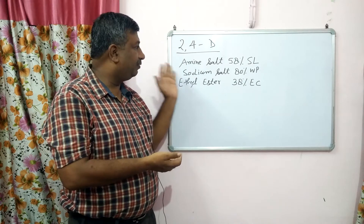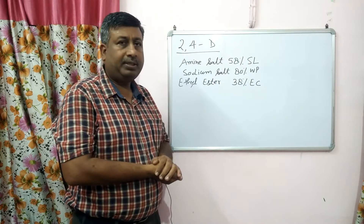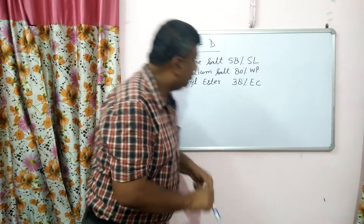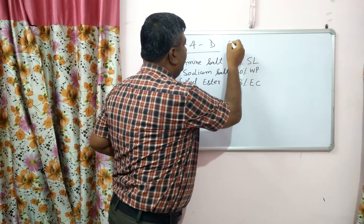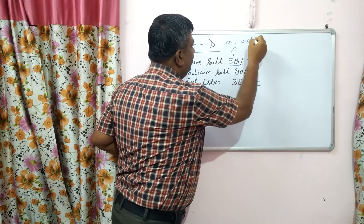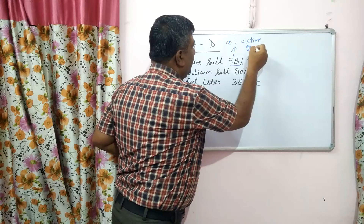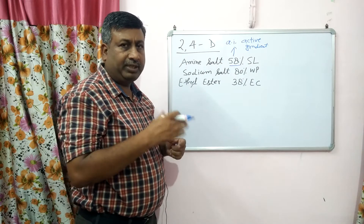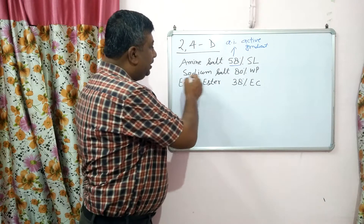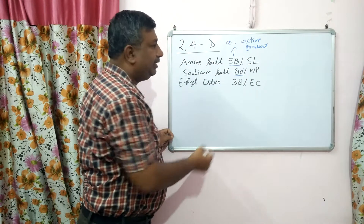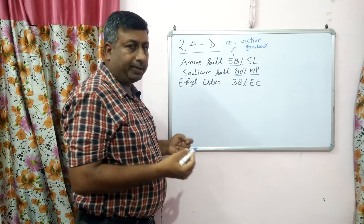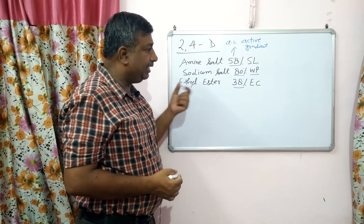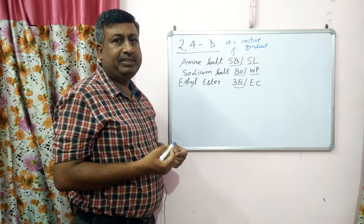There are 3 types of salts. First is amine salt, available as 58% active ingredient (AI) in soluble liquid (SL) formulation. Second is sodium salt, with 80% active ingredient in wettable powder form. Third is ethyl ester, with 38% active ingredient in EC, that is emulsified concentrate formulation.